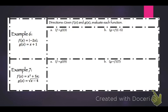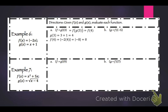For f of g of 3, first find g of 3: 3 plus 1 equals 4. Now plug that 4 into f: f of 4 is negative 2 times 4, which is negative 8. The absolute value gives positive 8. For g of f of negative 5, plug in negative 5 to get 10, then find g of 10: 10 plus 1 equals 11.